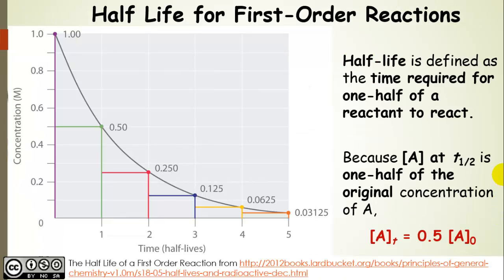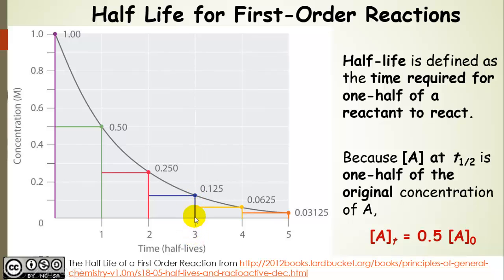We also need to look at the half-life for a first order process. The half-life is defined as the time required for one half of a reactant to react. We start with 100% of the reactant, and when half of it has reacted, that is the first half-life. Going from that time and waiting for another half to disappear is the second half-life, then the third, fourth, and fifth half-lives. We can define the concentration of A at the first half-life as one-half the initial concentration.